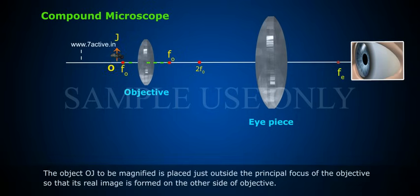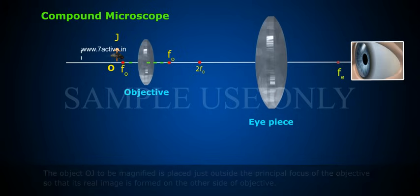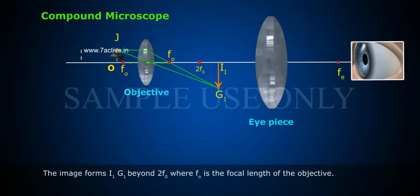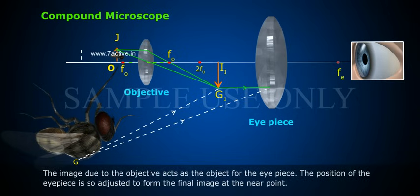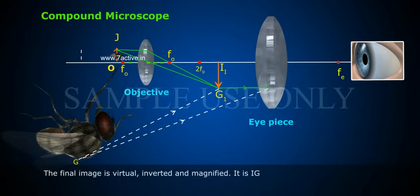The object OJ to be magnified is placed just outside the principal focus of the objective, so that its real image is formed on the other side of the objective. The image I1G1 forms beyond 2F0, where F0 is the focal length of the objective. The image due to the objective acts as the object for the eyepiece. The eyepiece position is adjusted to form the final image at the near point. The final image is virtual, inverted, and magnified.